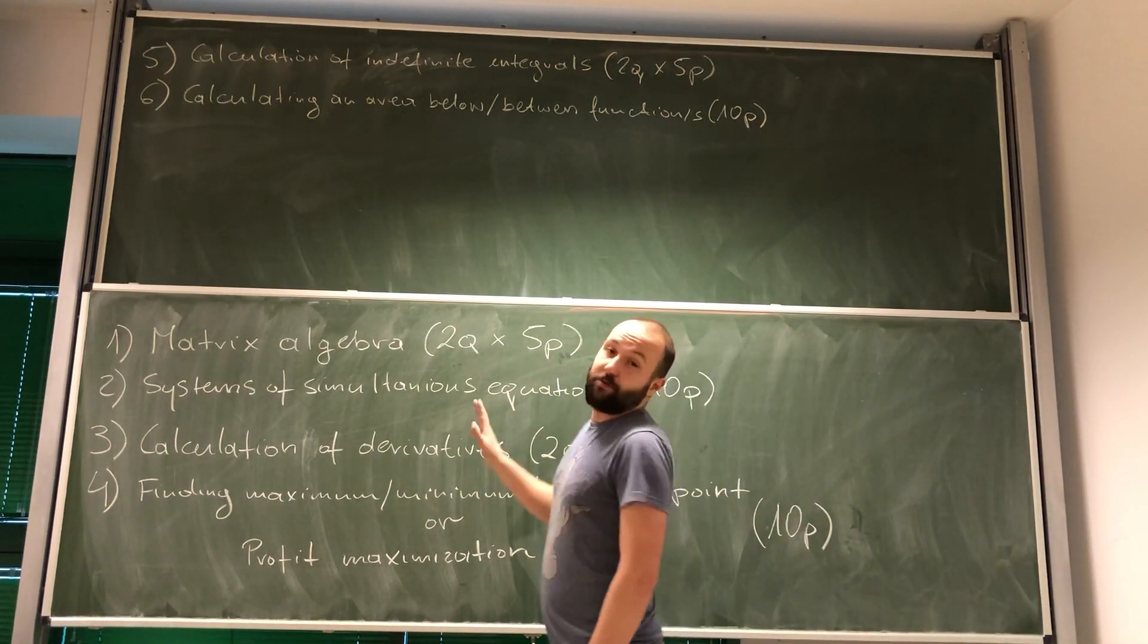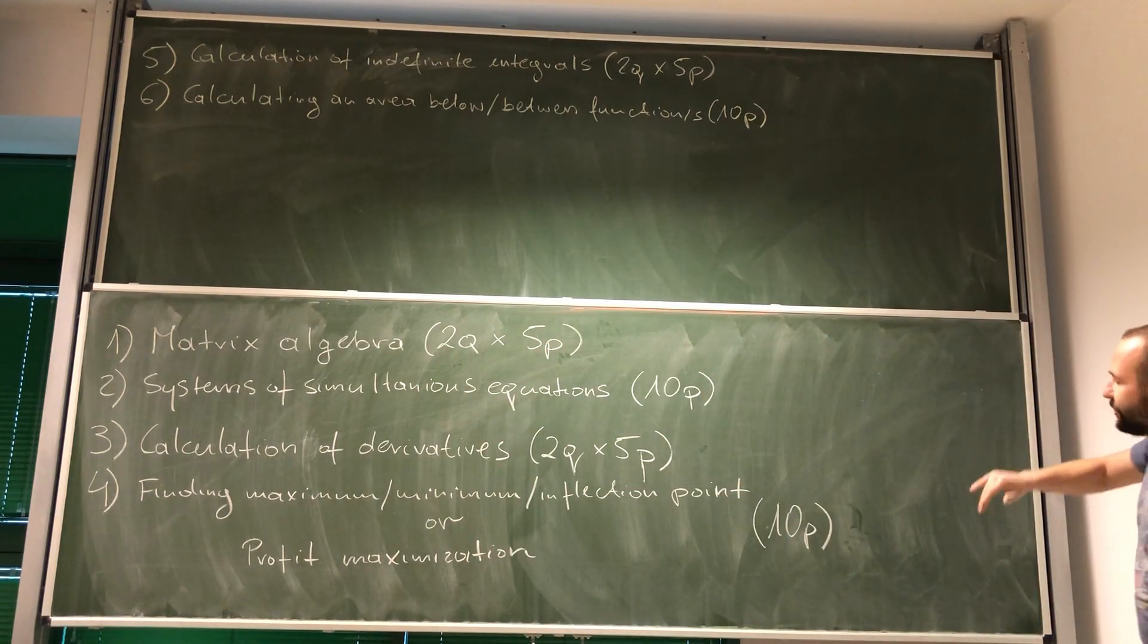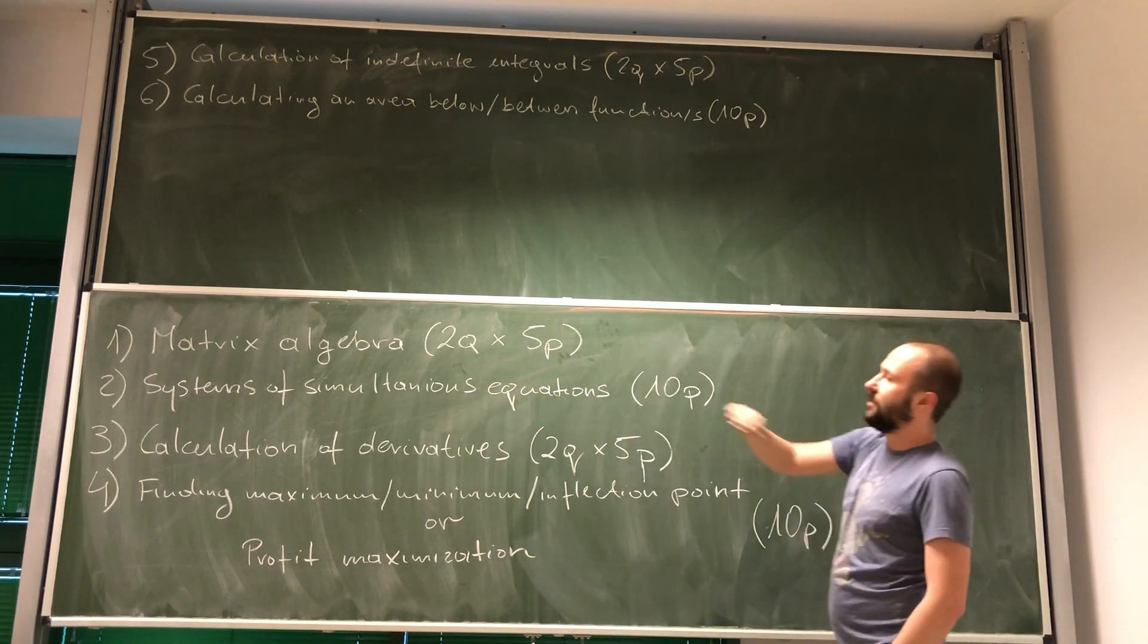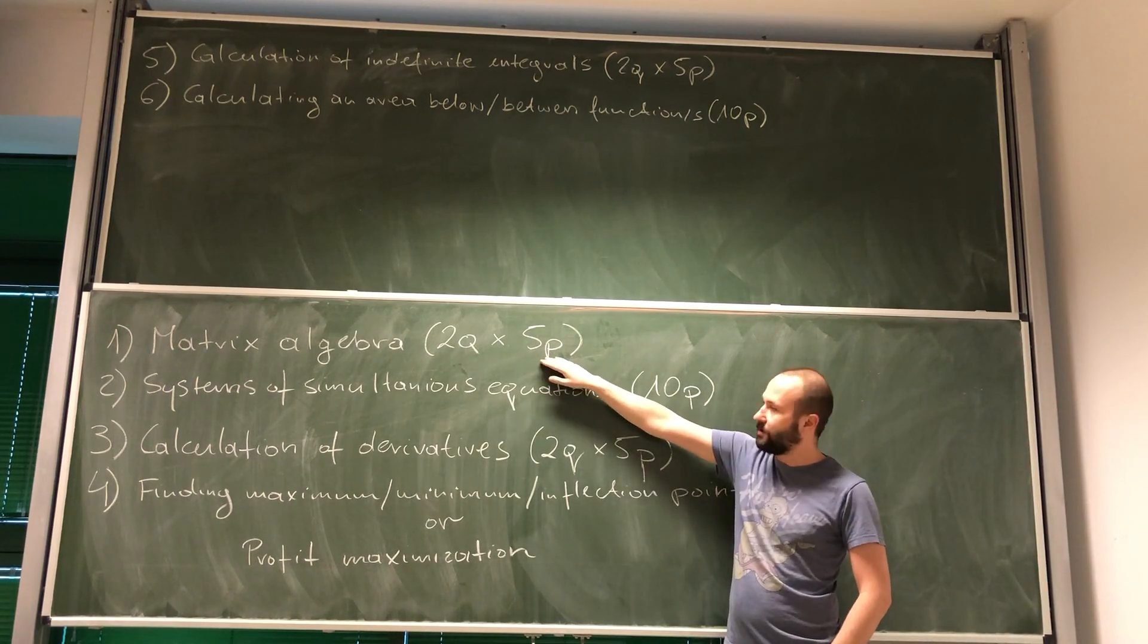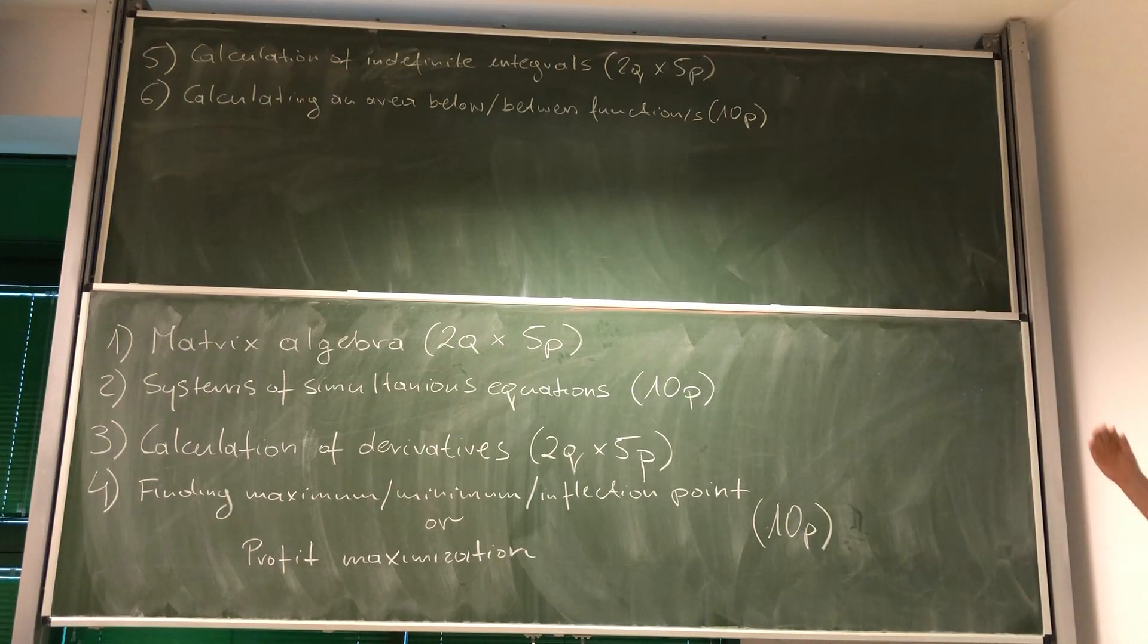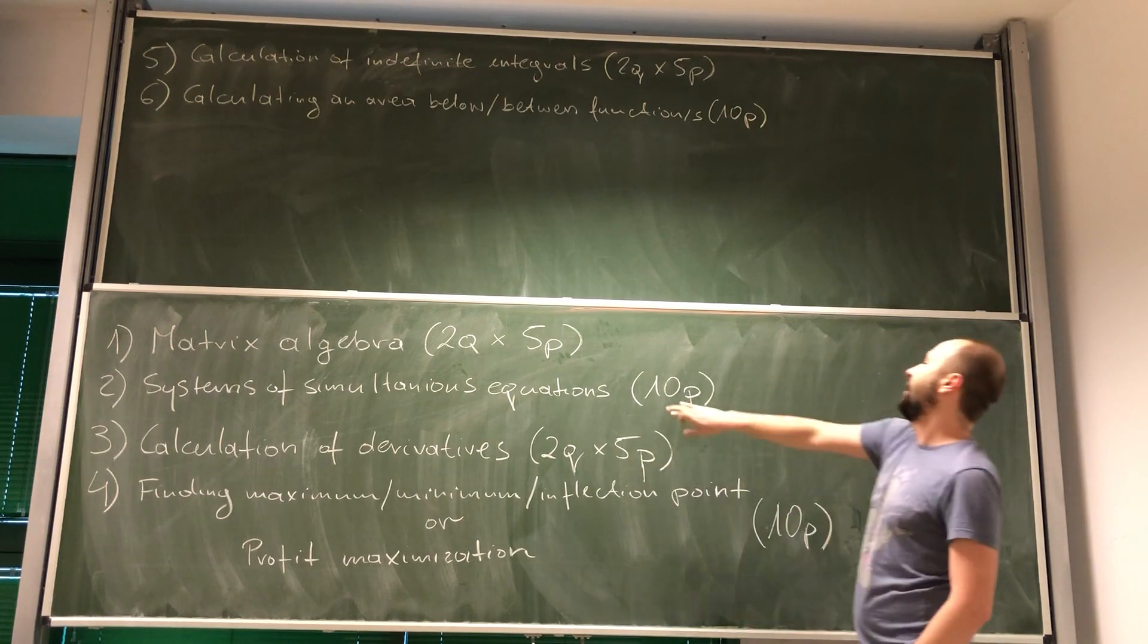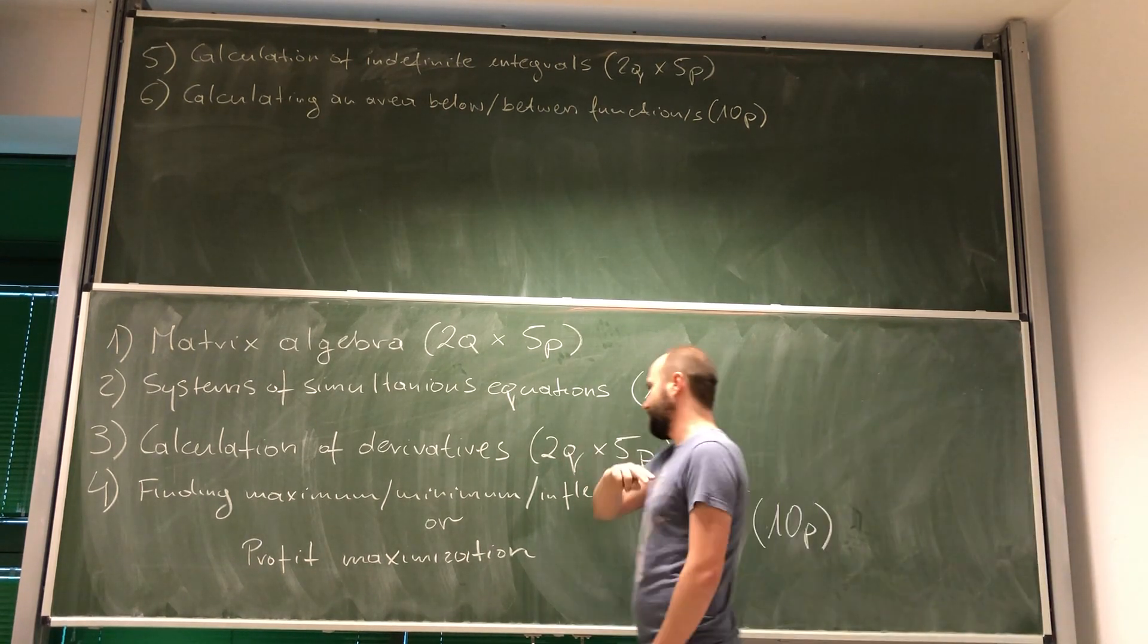Let's go through all the sections. In the first section, you will be given two questions from matrix algebra, each is going to be worth five points. In the second one, you'll have to solve a system of simultaneous equations using Cramer's rule or matrix inversion. It's going to be worth 10 points.